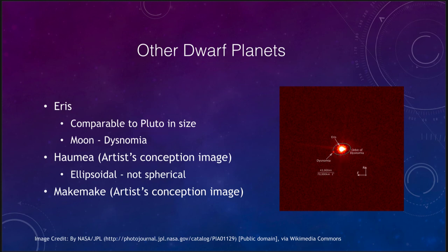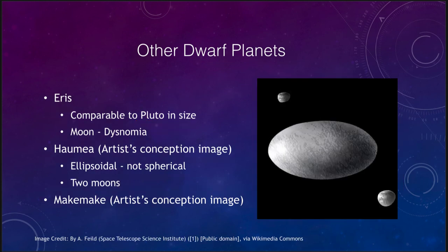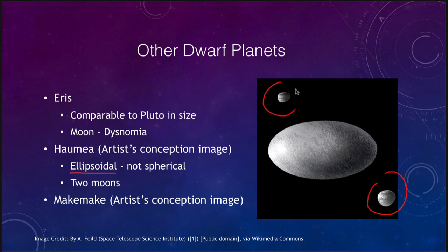Haumea is shown here in an artist's conception image — not confirmed, but based on observations and studies of similar objects. It is the one dwarf planet that is ellipsoidal rather than spherical, compressed into a squashed ellipsoid shape. It also has two small moons orbiting around it.